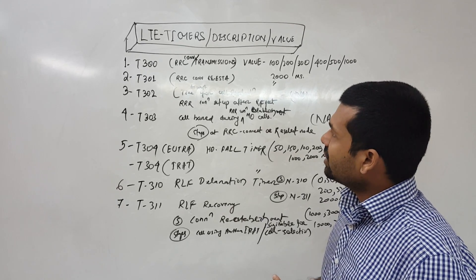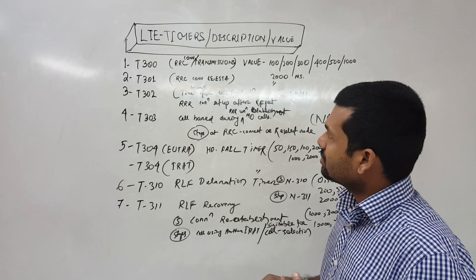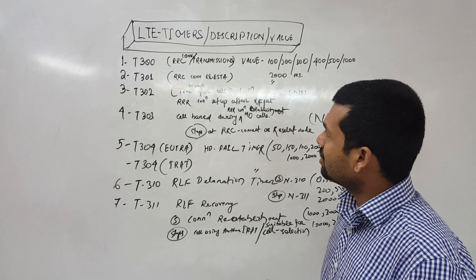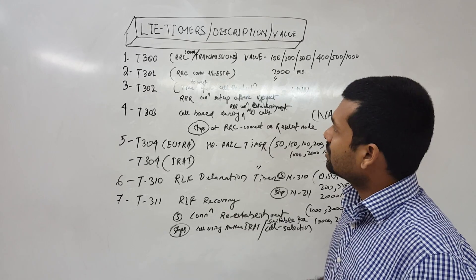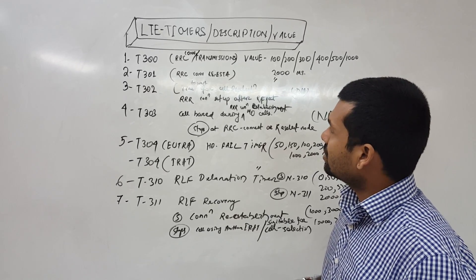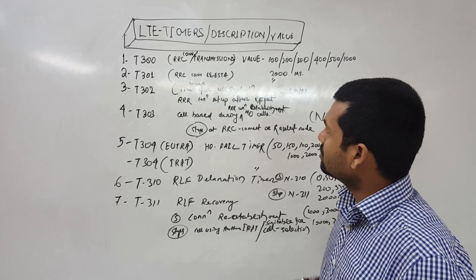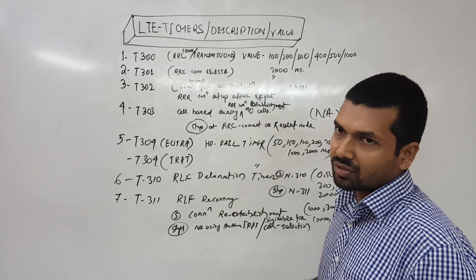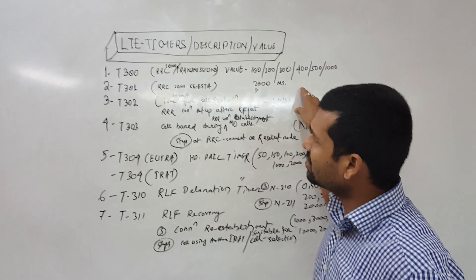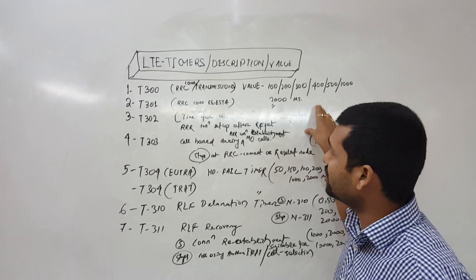RRC connection setup after rejection. So this is the time where we wait for reselection of the cell or when the RRC connection is set up after the rejection of the connection.